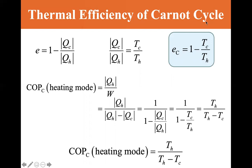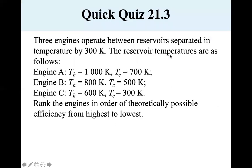Now let's keep in mind this equation here as we go through this exercise. Three engines operate between reservoirs separated in temperature by 300 K. The reservoir temperatures are as follows. Engine A: T-hot is 1000 Kelvin, T-cold is 700 Kelvin. Engine B: T-hot is 800 Kelvin, T-cold is 500 Kelvin. Engine C: T-hot is 600 Kelvin, and T-cold is 300 Kelvin. Rank the engines in order of theoretically possible efficiency from highest to lowest.